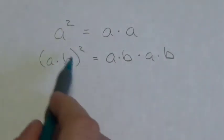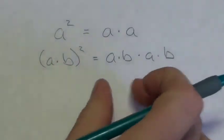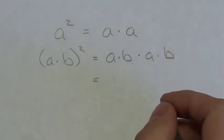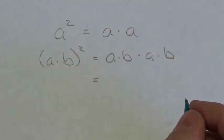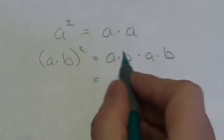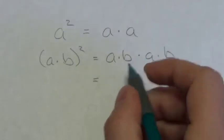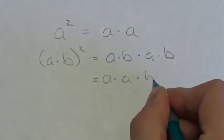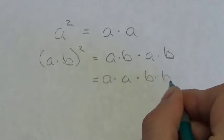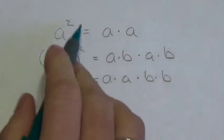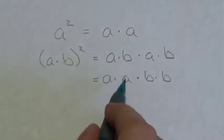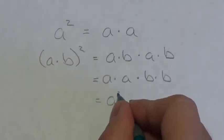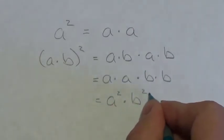That square means it's the whole thing — whatever is in parentheses multiplied by itself. Now, multiplication is commutative, just like addition. So I can change the order of those two middle factors. That becomes A multiplied by A, multiplied by B, multiplied by B. And I can now fast-track this multiplication and get A squared multiplied by B squared.